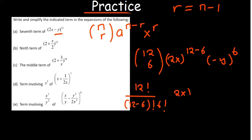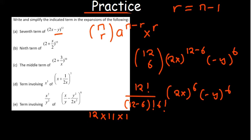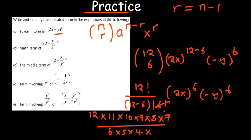We have 2x raised to the power 6 and negative y raised to the power 6. Whenever you raise a negative number to an even power, it is going to be positive. For simplification, 12 factorial gives you 12 times 11 times 10 times 9 times 8 times 7, the 6 factorial cancels, and you still have 6 times 5 times 4 times 3 times 2 times 1 in the denominator. 2 to the power 6 is 64, giving us 64x to the power 6 y to the power 6.